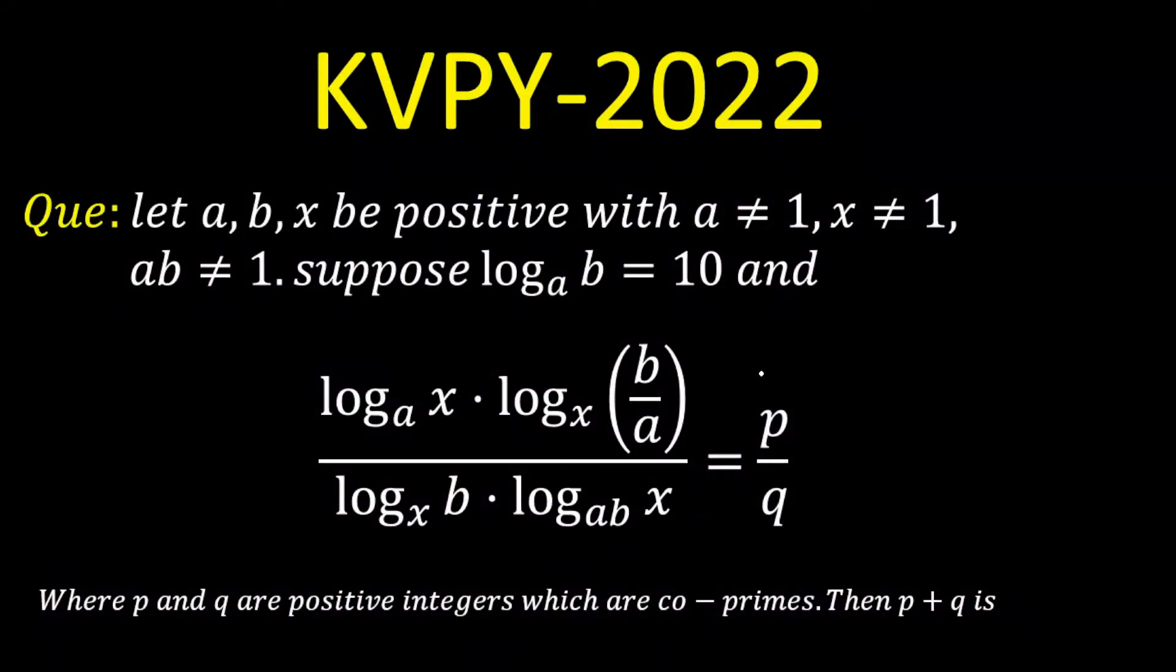Today we're going to solve a question based on logarithm which was asked in KVPY paper. The question is: let a, b, x be positive where a is not equal to 1, x is not equal to 1, and combined ab is not equal to 1.